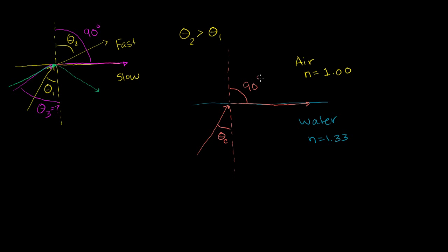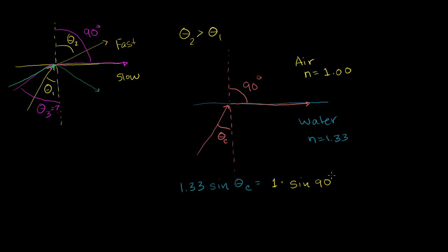So where this right over here is 90 degrees. If I have any incident angle less than this critical angle, light will escape. At that critical angle, it just travels at the surface, and anything larger than that critical angle gives us total internal reflection. So let's apply Snell's law: the index of refraction of the water, 1.33, times the sine of our critical angle, equals the index of refraction of the air, which is 1, times the sine of this refraction angle — so times the sine of 90 degrees.